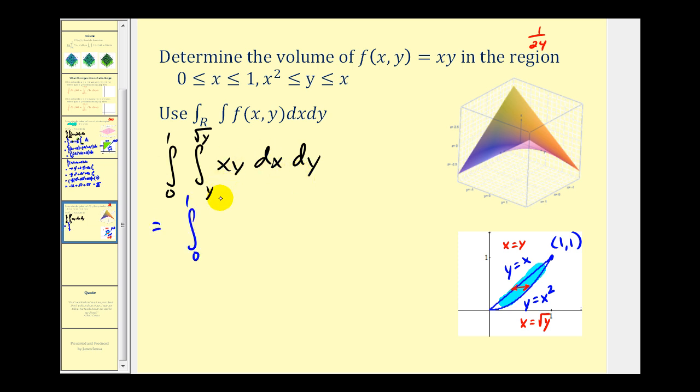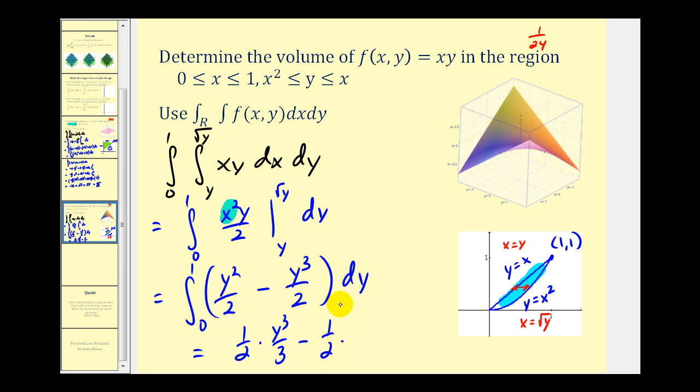We know from the previous presentation this should equal 1 over 24 if we do it correctly. Treating y as a constant we have x squared y over 2. We'll replace x with the square root of y and y. Replacing x with the square root of y we have y squared over 2 minus y to the third over 2. So we have 1 half times y to the third over 3 minus 1 half times y to the fourth over 4, evaluated at 1 and 0.